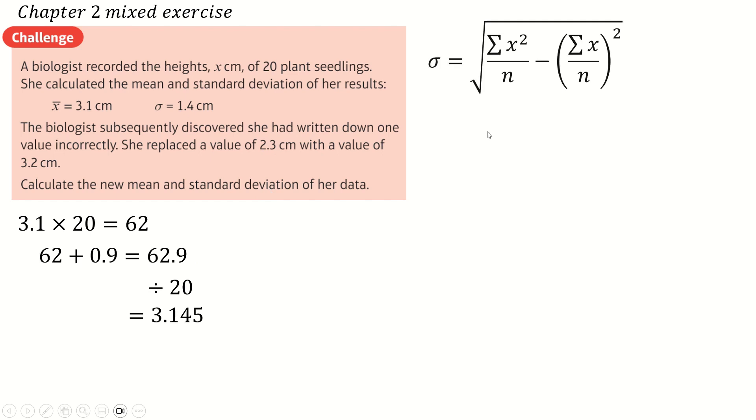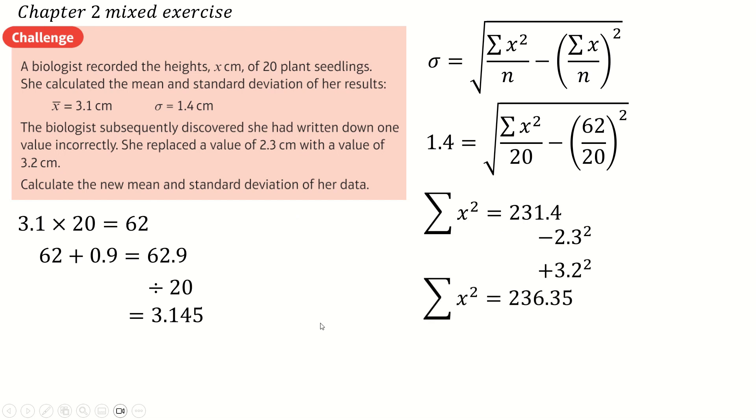For our new standard deviation, we're going to be thinking about this formula. But firstly, we need to use this formula to work out sigma of x squared. So sigma of x over n for the old data is just 3.1 or 62 over 20, it doesn't matter what you say. Sigma was 1.4. We can rearrange this to find sum of x squared, which is great. Sum of x squared is this. I can now remove 2.3 squared from that and add in 3.2 squared to get a new sigma of x squared for the new data.